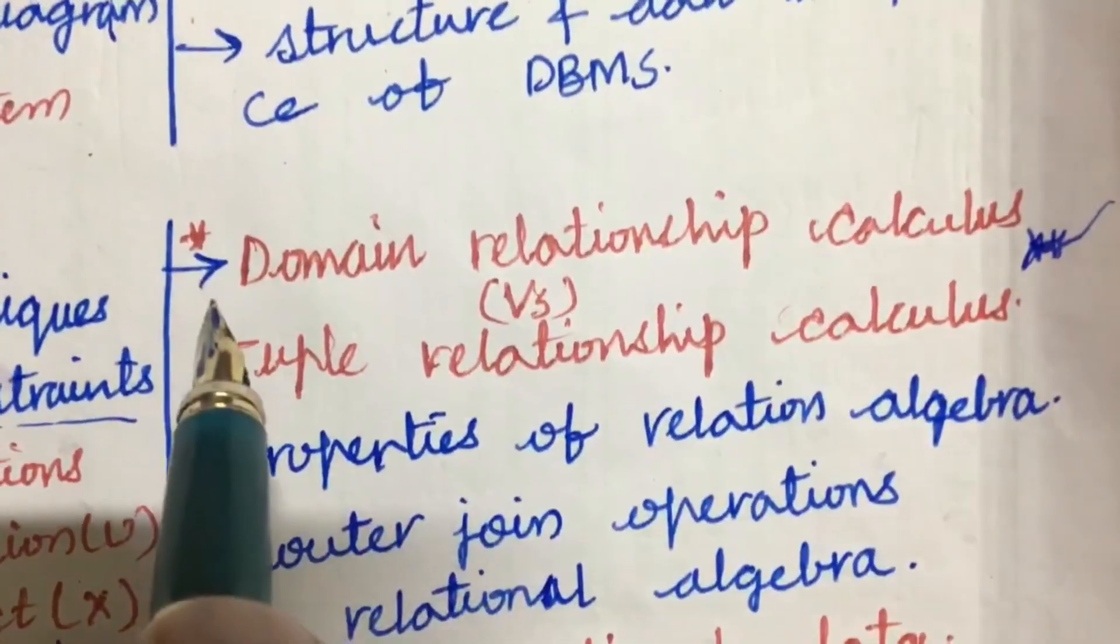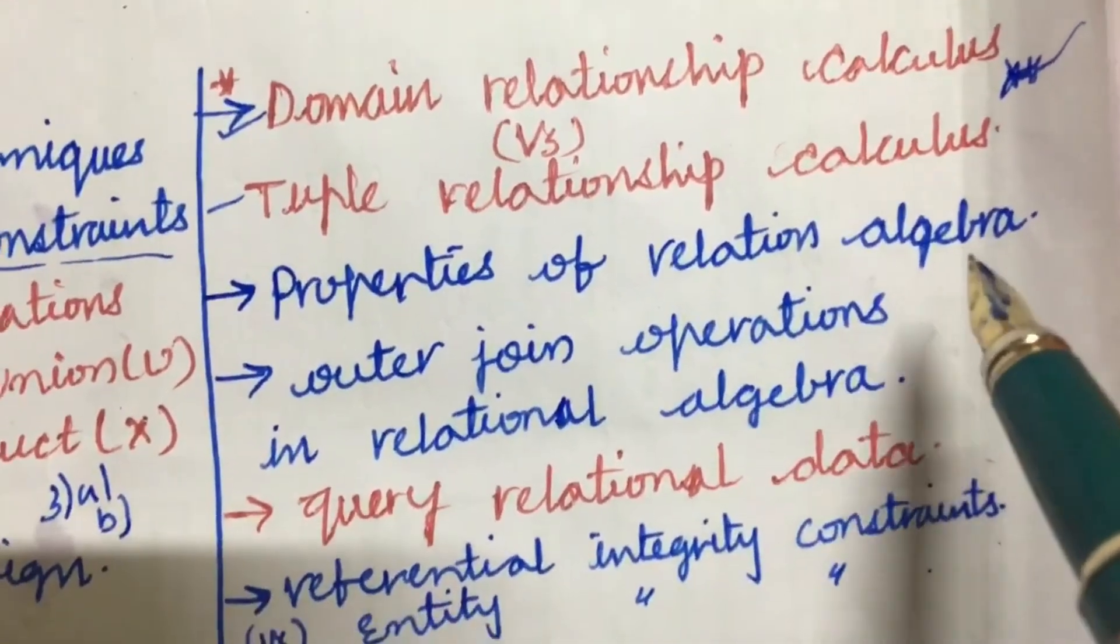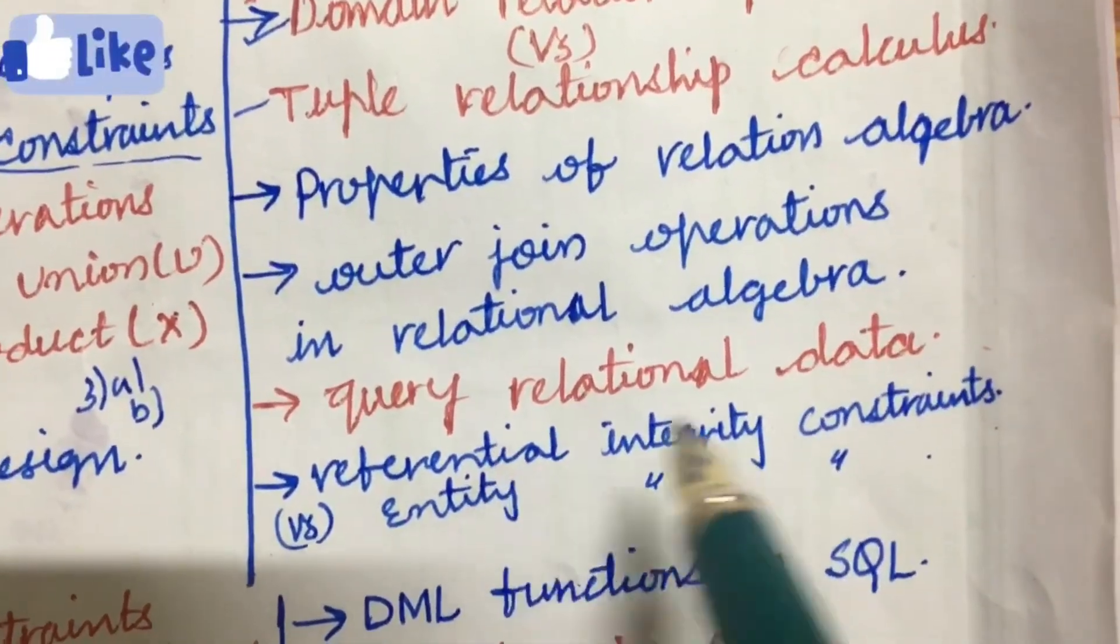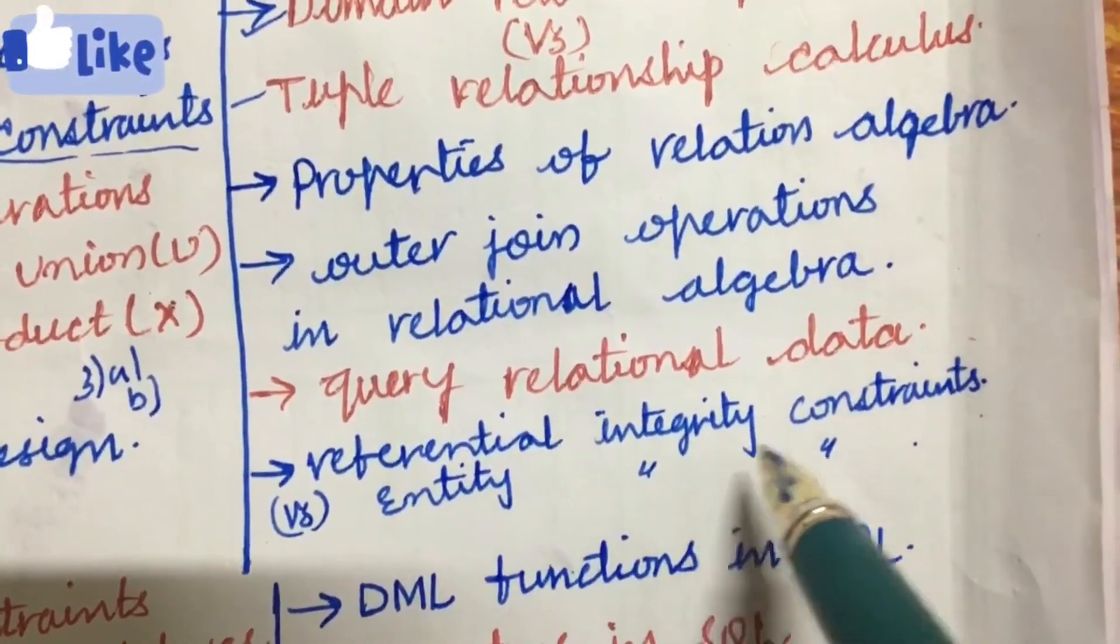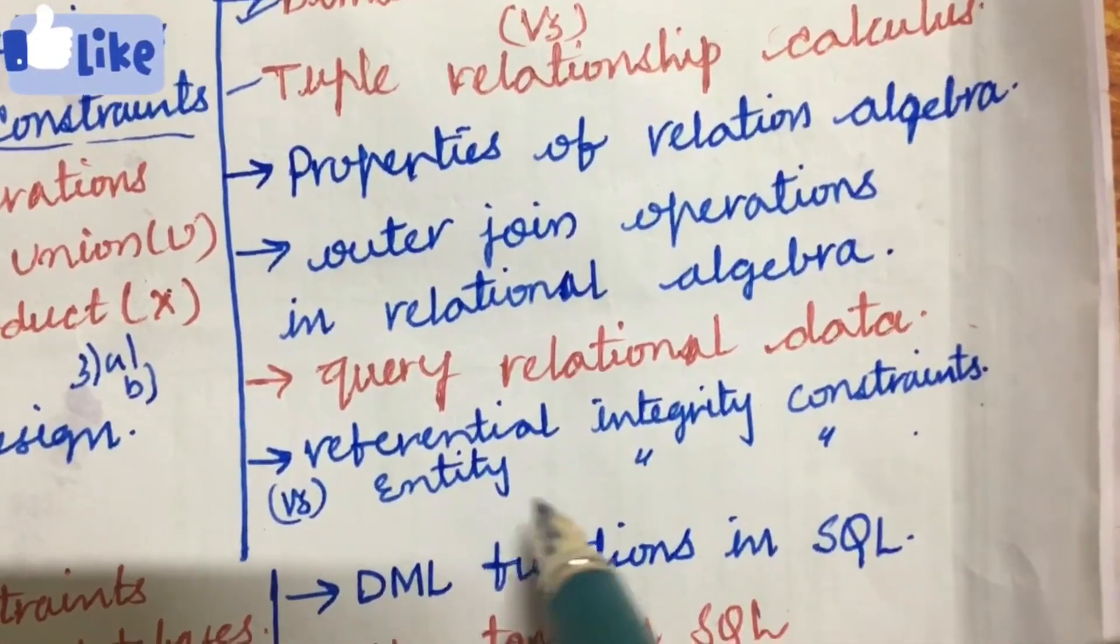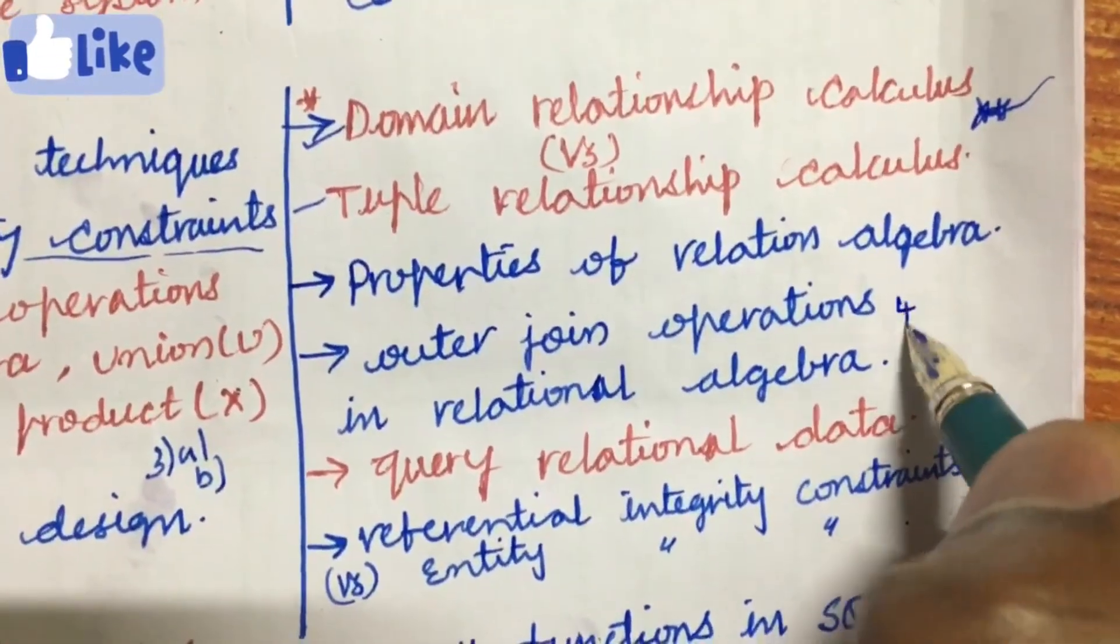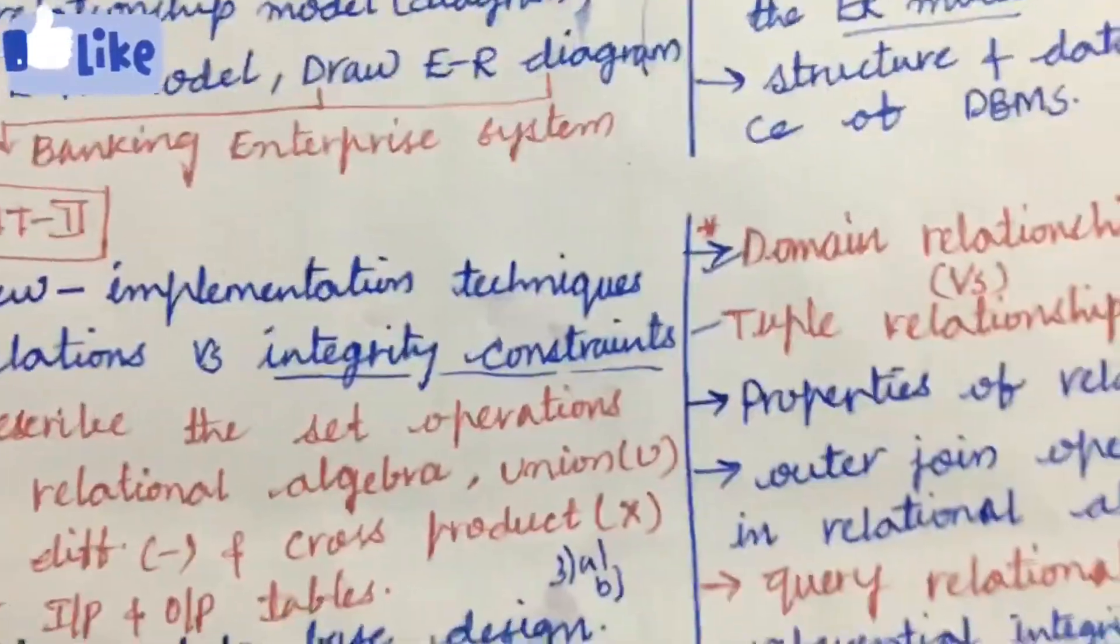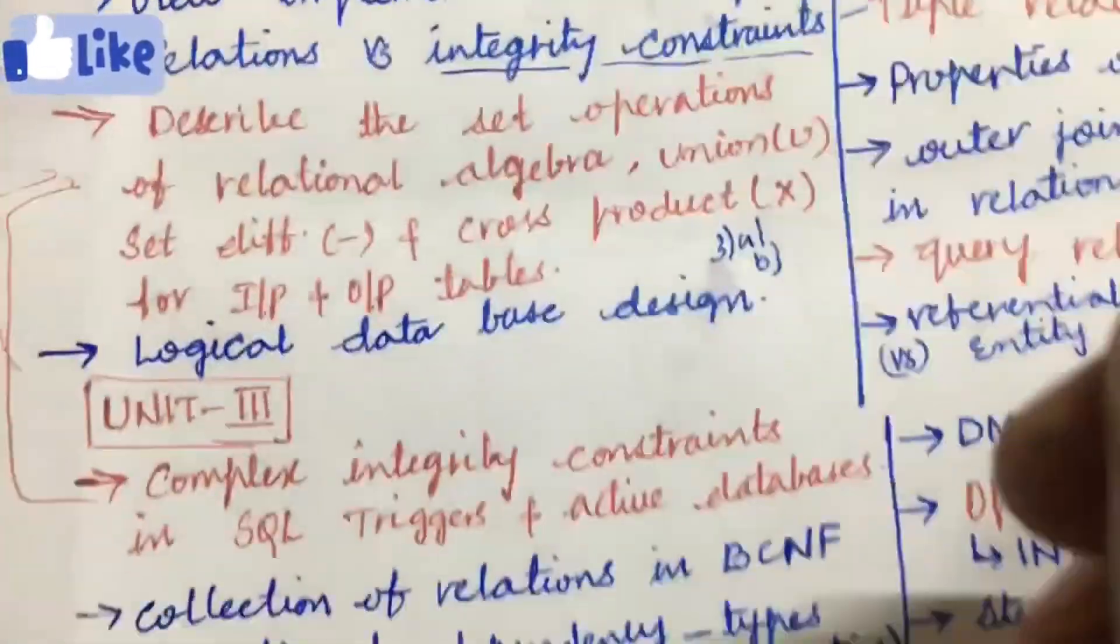Relationships, properties of relational algebra, outer join operations in relational algebra, and the query relational data as well as referential integrity constraint versus entity integrity constraints. These may be 4A as well as 4B. Do not expect the order of questions in one, two, three. That may be jumbled also. Sometimes second unit questions are coming in fifth and sixth question also sometimes.